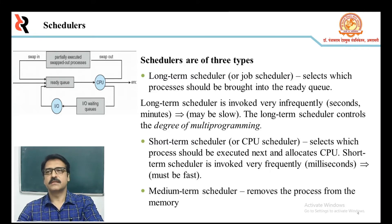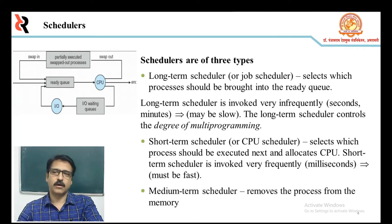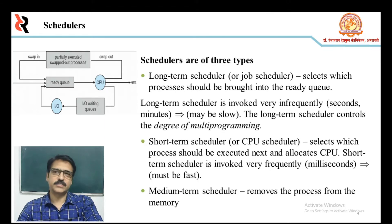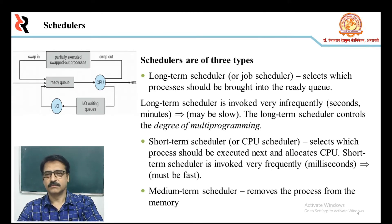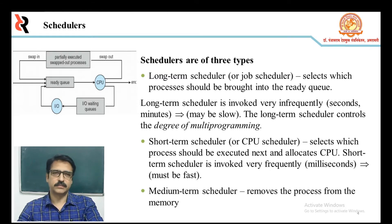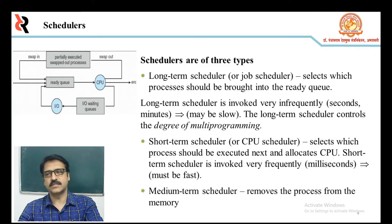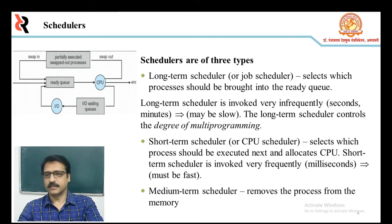When a process is interrupted, it is transferred to the waiting queue. If the process has completed or been aborted, it is discarded — that is, it exits. In either case, the dispatcher then selects a process from the queue to execute. There are three types of schedulers: long-term scheduler, short-term scheduler, and medium-term scheduler. The long-term scheduler, also called job scheduler, determines which programs are admitted to the system for processing.